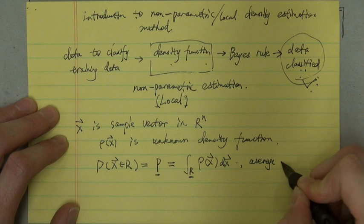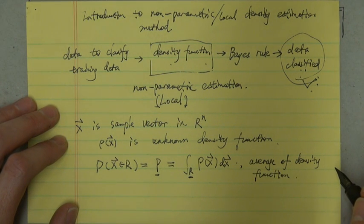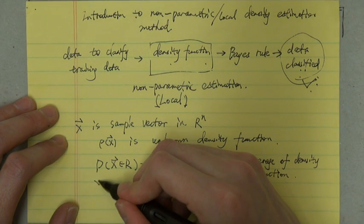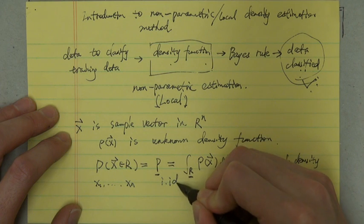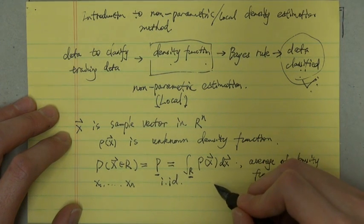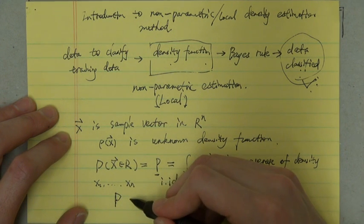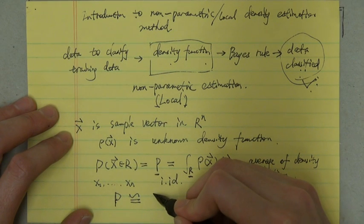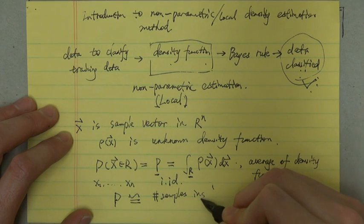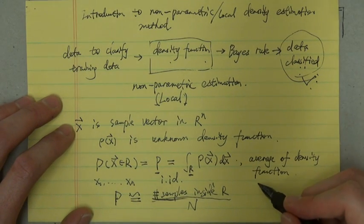Suppose that we have x₁ to xₙ drawn independently and identically distributed according to the probability density function. According to the probability density function of ρ(x⃗), we can write P, the probability of x belongs to R, approximately as the number of samples inside divided by the total number of samples.